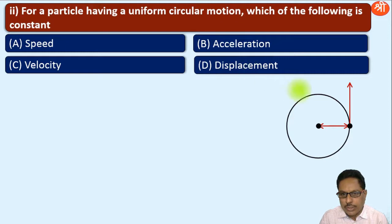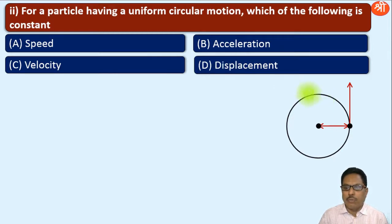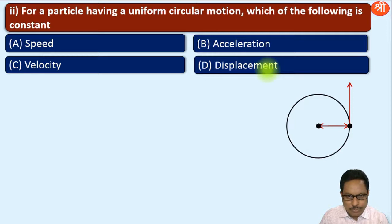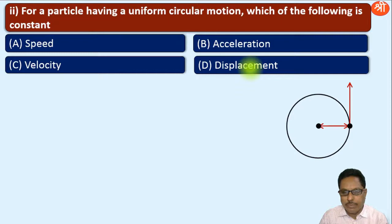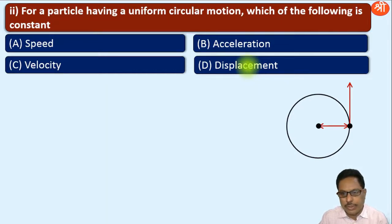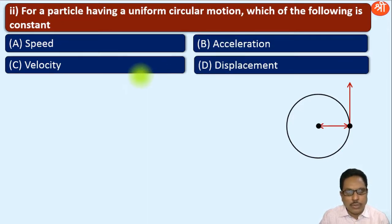Displacement also changes. When the particle moves from one position to another, displacement has one direction; when it moves from the top position to the left position, displacement has a different direction. So the direction of displacement also changes. Therefore, acceleration, velocity, and displacement are all not constant in UCM — their magnitudes may be constant, but their directions are not. So only option A — speed — will be the correct answer.